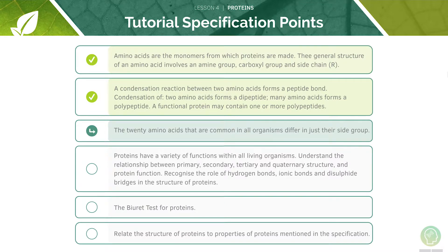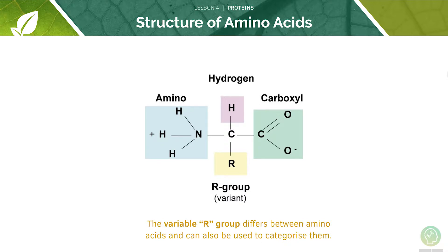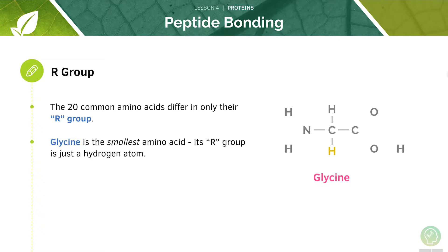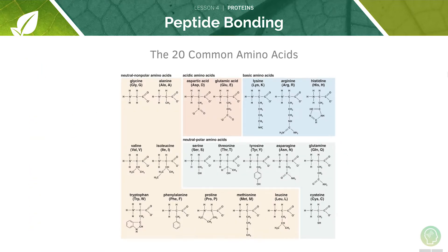Our next point is to look at the 20 common amino acids. The 20 common amino acids present in all living organisms differ only in the R group. This variable group is what gives each amino acid its unique chemical and physical properties, and is also commonly known as a side chain. Different amino acids can be grouped together based on these. Glycine is the smallest amino acid — its R group is simply a hydrogen atom. There's no need to memorize all 20 common amino acids; just understand how they differ.